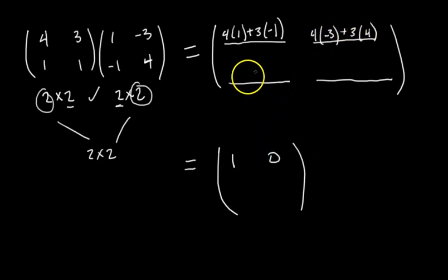4 times negative 3 plus 3 times 4. What does this simplify to? Negative 12 plus 12, this becomes 0. Okay, this entry is the second row, first column. So we do second row times first column. We dot them. So we get 1 times 1 plus 1 times negative 1, and what does that reduce to? A 0.